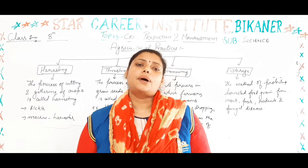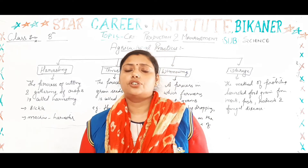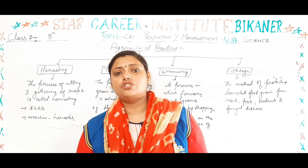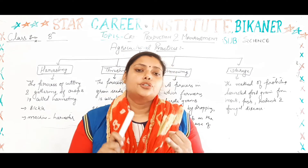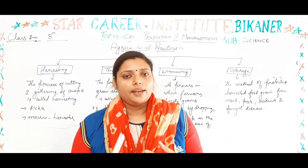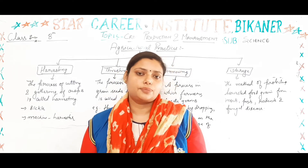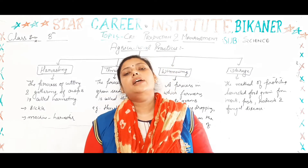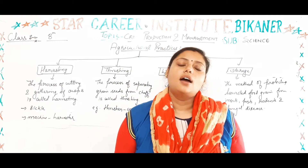Now let's talk about the next steps, which are the last four steps of agricultural practices. These are harvesting, threshing, winnowing, and storage. We will then discuss animal husbandry. First, let's talk about what harvesting is.